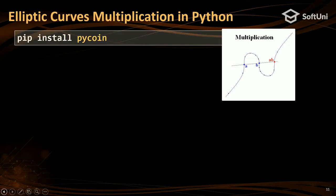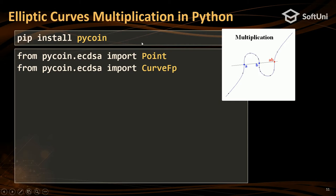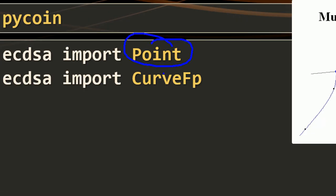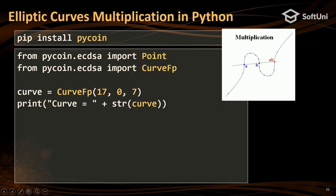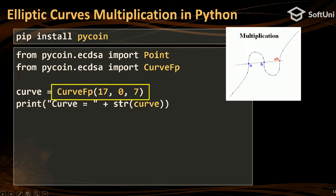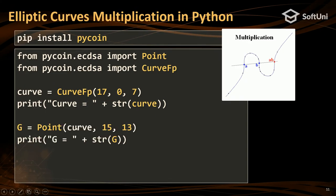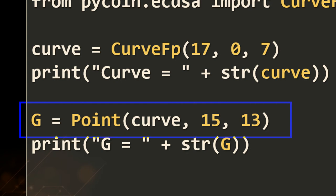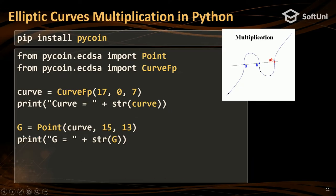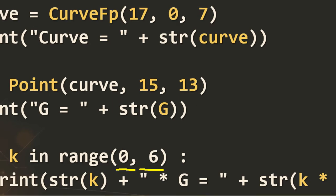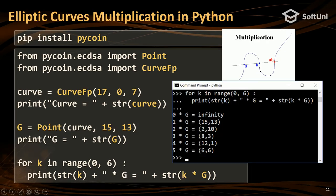We can play with this in Python. We install a pcoin library, include a point class and curve_fp for the curve. We can define our curve from the previous slide and print it. If the generator point is a given value, it should stay on the curve. If we multiply it by 0, 1, 2, 3, 6 — we obtain certain results. Multiplying by zero gives infinity; multiplying G by one gives the same point G; multiplying by two moves it to another location.